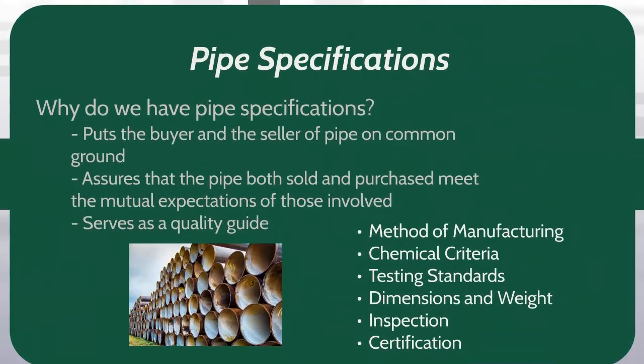Let's move on to pipe specifications. Why do we have pipe specifications? They put the buyer and the seller of pipe on common ground. Pipe specifications assure that the pipe both sold and purchased meet the mutual expectations of those involved, and it serves as a quality guide. Pipe specifications include the method of manufacturing, chemical criteria, testing standards, dimensions and weight, and inspection and certification.